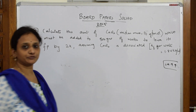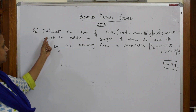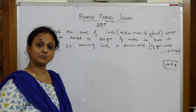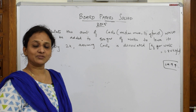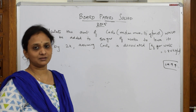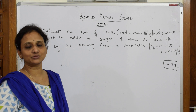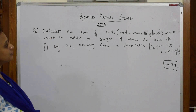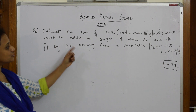Let's come back to the next question from the 2015 paper — Part B. Whenever a numerical is given to you, please try to first write the formula, because the formula carries marks. Marks are also given for noting the given data, for substituting in the formula, and for writing the final answer with units. So please don't leave any step.